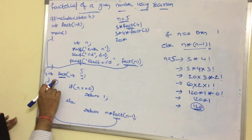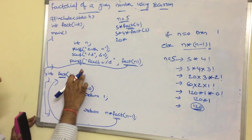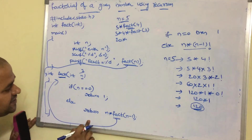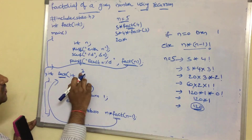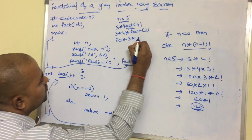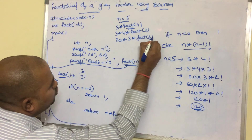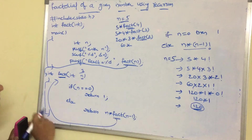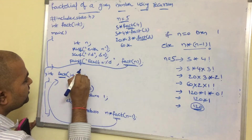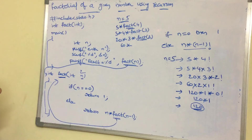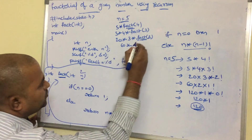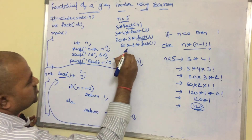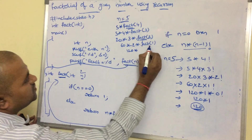Control transfers to the function definition again. Now n value is 2; 2 == 0 is false, so the else block executes: 2 * fact(1). So 60 * 2 = 120, giving 120 * fact(1). Once again we call the function; now n value is 1. 1 == 0 is false, so the else block executes: 1 * fact(0). So 120 * 1 = 120, giving 120 * fact(0).